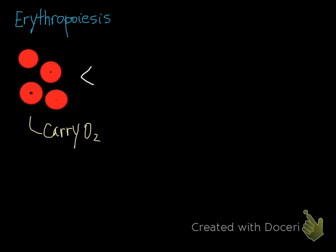So erythropoiesis occurs primarily in the bone marrow. It can also occur in the spleen and liver, especially in cases where the body needs more red cells.